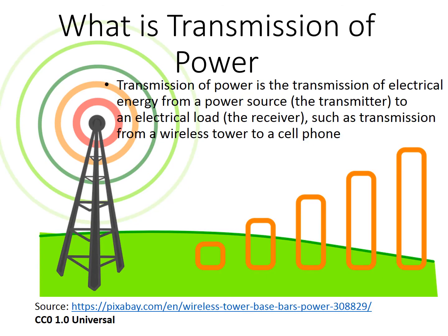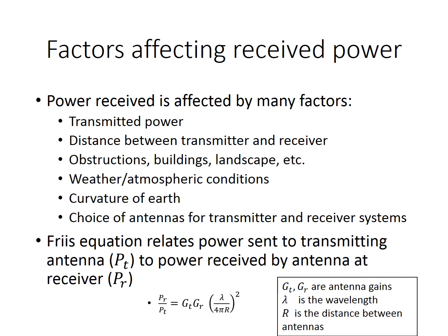In radio communications, electrical energy is transmitted from an electrical source, the radio transmitter, to an electrical load, the receiver. However, the power level is typically very weak by the time it reaches the receiver. Many factors affect received power, and some of them are listed here.